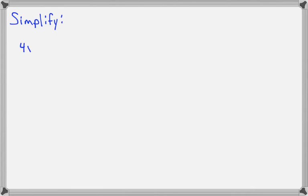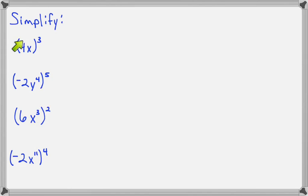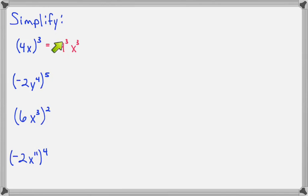Now let's simplify a few problems together using our products to powers rule. Because this is a product, we can raise 4 to the third and x to the third. 4 to the third is 4 times 4 times 4: the first 4 times 4 makes 16, and then times another 4 makes 64. So here we have 64x to the third.